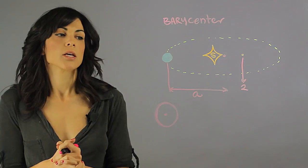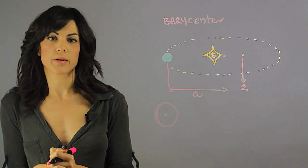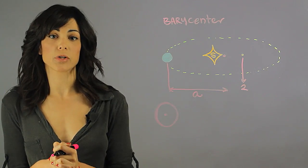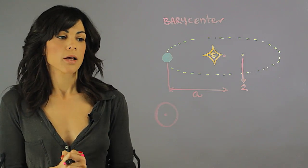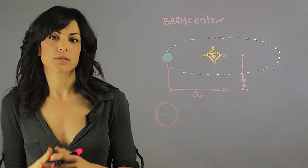So to figure out what the barycenter is, which is the point at which the planet actually orbits, the mass of the planet does come into play.